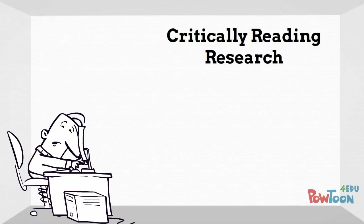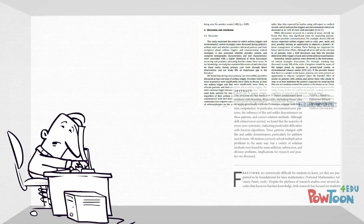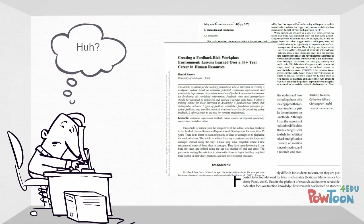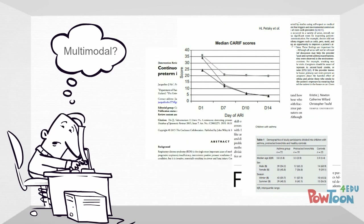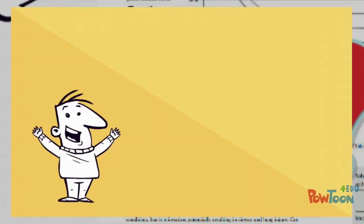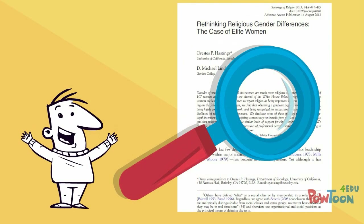When Jacob was an NKU student, he struggled to read through academic research articles. The information is presented in such a way that it can be difficult to comprehend without proper background knowledge. Jacob would struggle over charts and graphs, the terminology, and sometimes had a hard time identifying the purpose of the article. That's why he's here now, to help you become a more critical reader of sociology research.